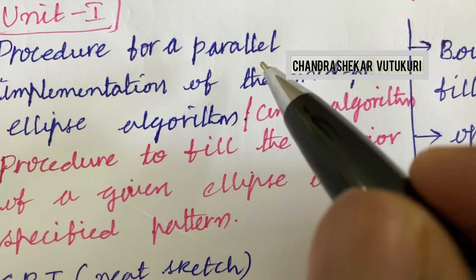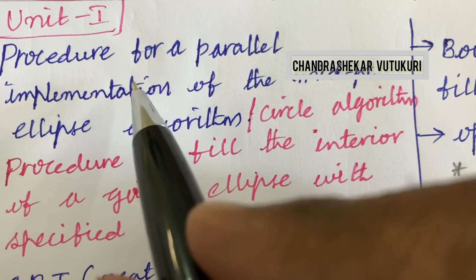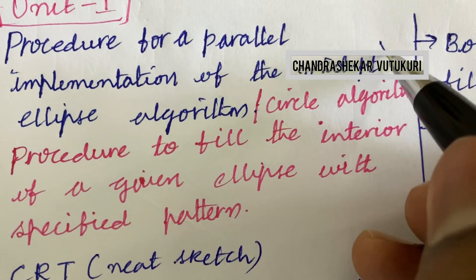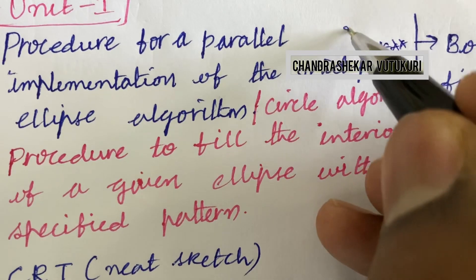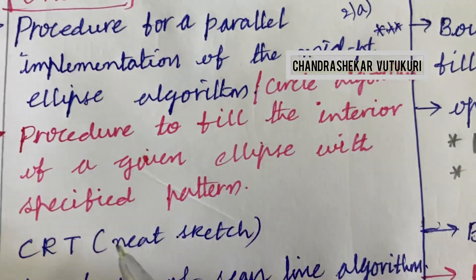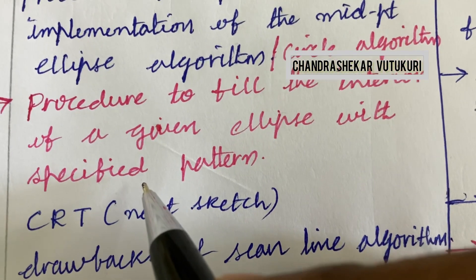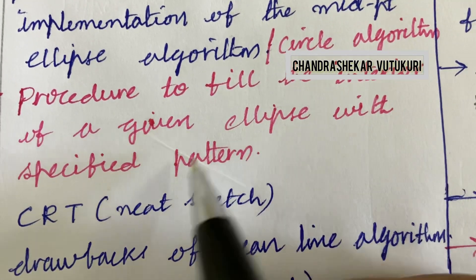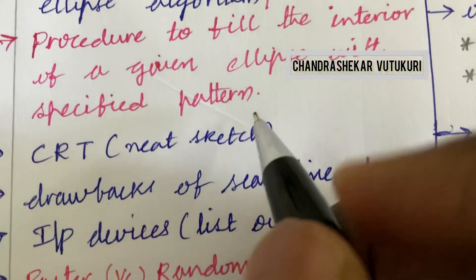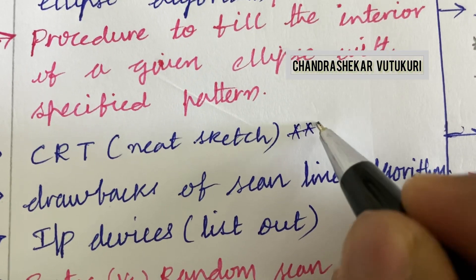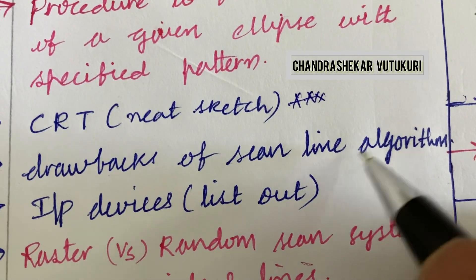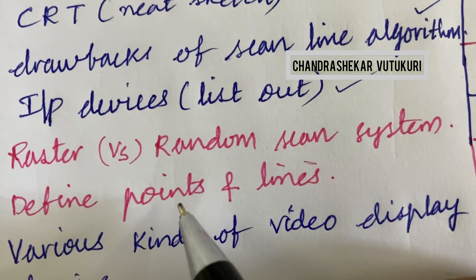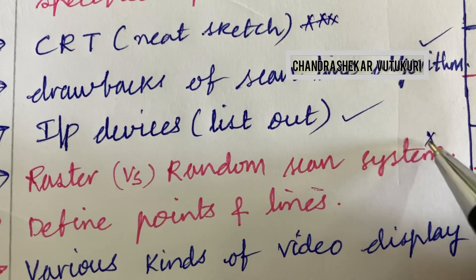The first gunshot question is the procedure for a parallel implementation of the midpoint ellipse algorithm or circle algorithm — out of these three, you are going to get one question for sure. Procedure to fill the interior of a given ellipse with a specified pattern, and the CRT along with a neat sketch, is said to be a topmost question. Drawbacks of a scanline algorithm — short question. Input devices — short question. Raster versus random scan system — short and long question, their differences.